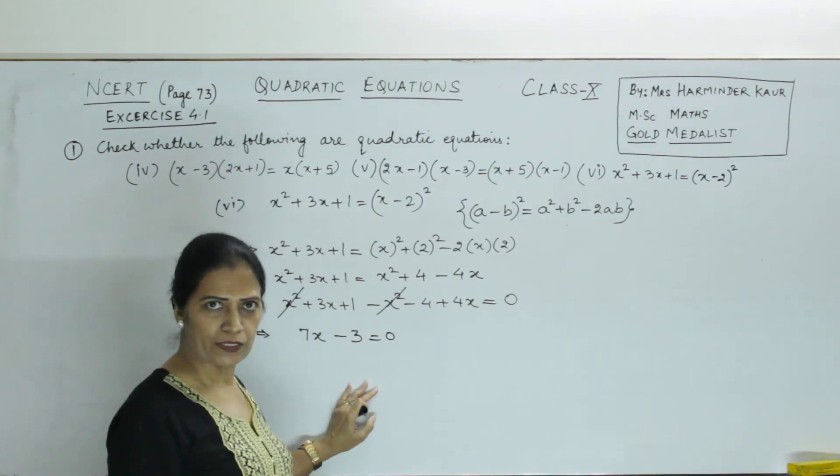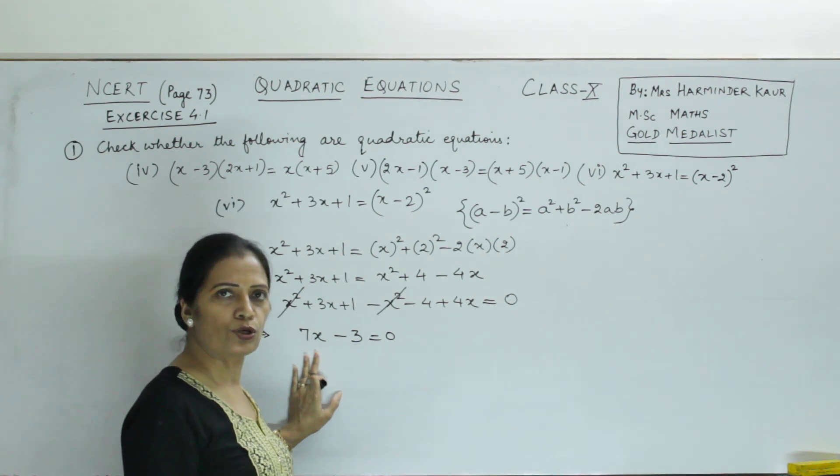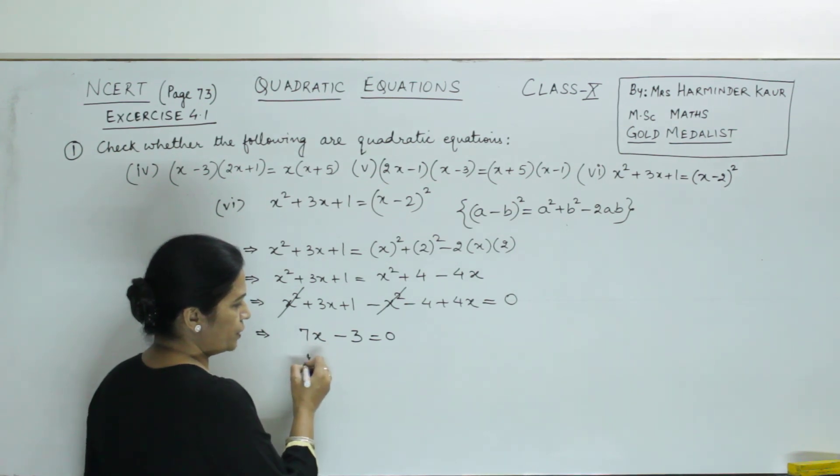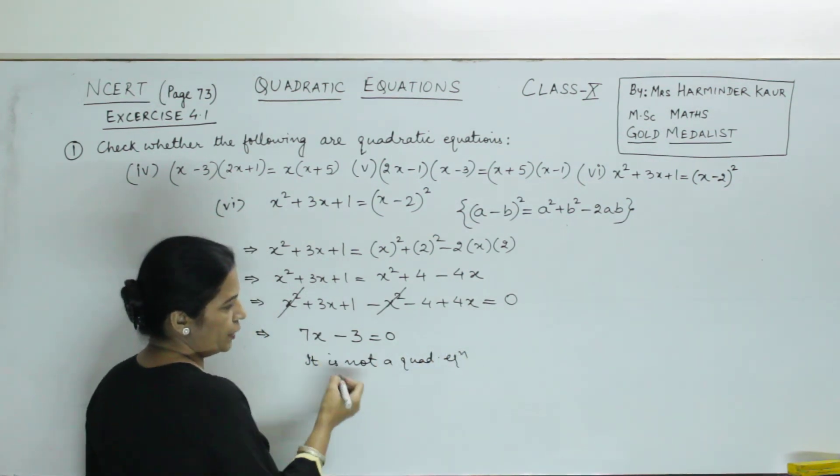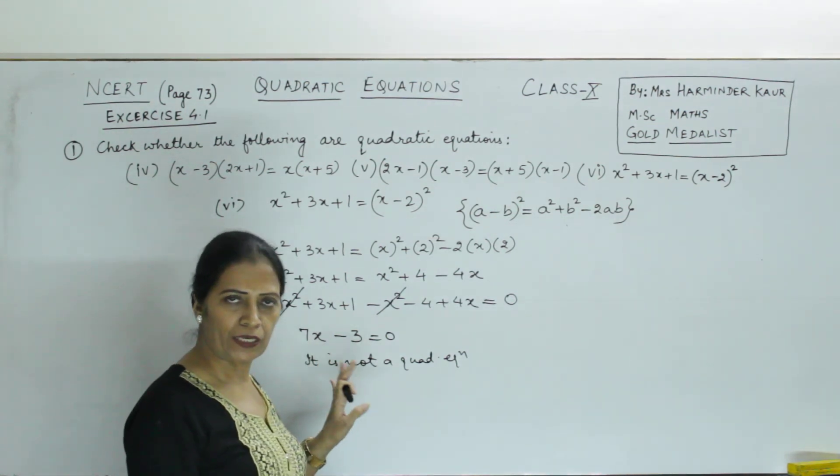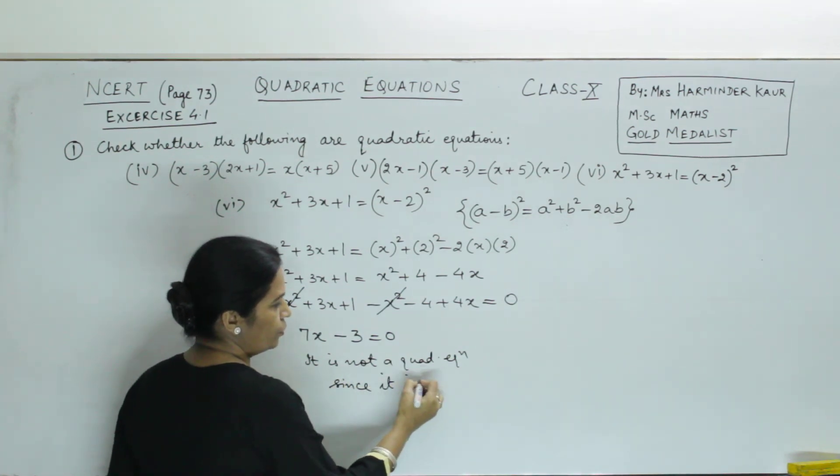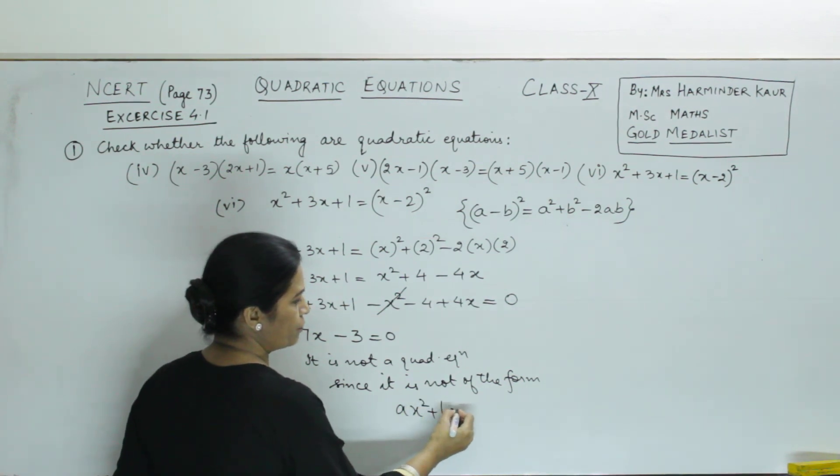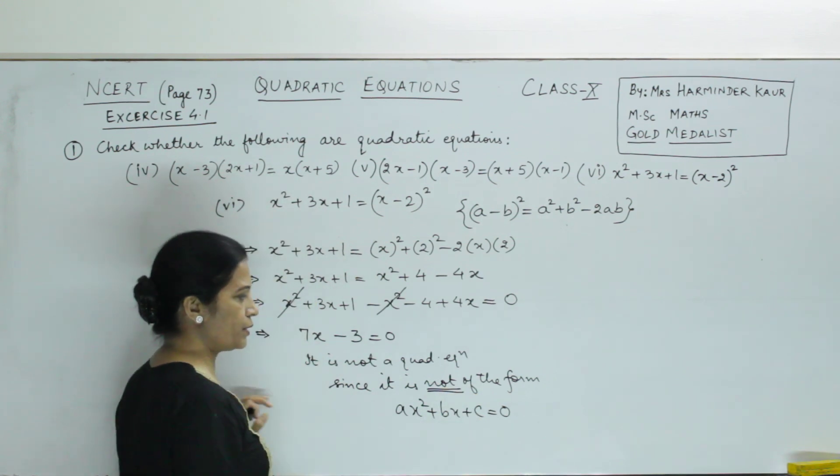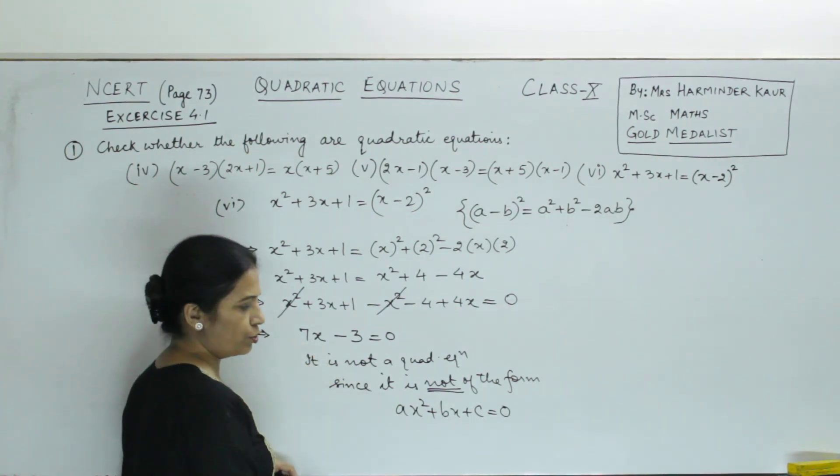Now, is this quadratic or not? How will we know? What is the highest power of x here? 1. If highest power of x is 1, it means it is not a quadratic equation. So, we write, it is not a quadratic equation. Why not quadratic? Because x² term is missing here, there is no x² term. So, it is not a quadratic equation. Since, it is not of the form ax² + bx + c = 0. Not of the form. That's why we say it is not a quadratic equation. b and c we can find from here, but a we cannot find, a is zero. So, we say, it is not a quadratic equation.